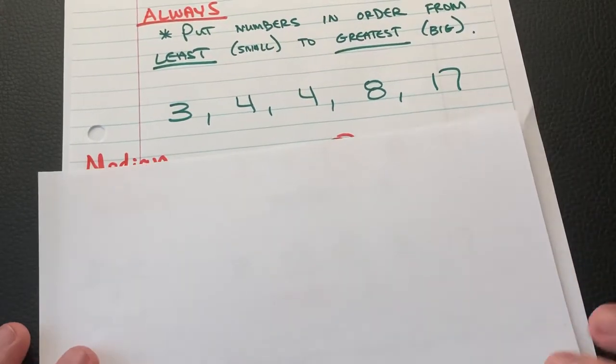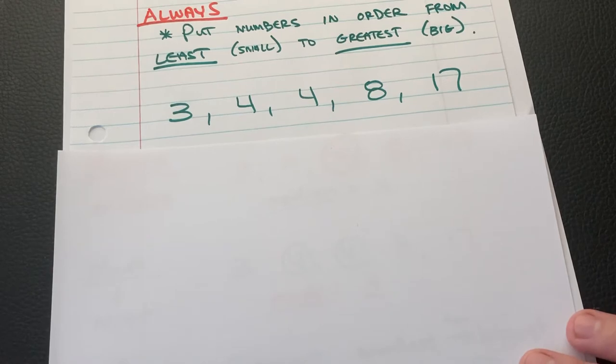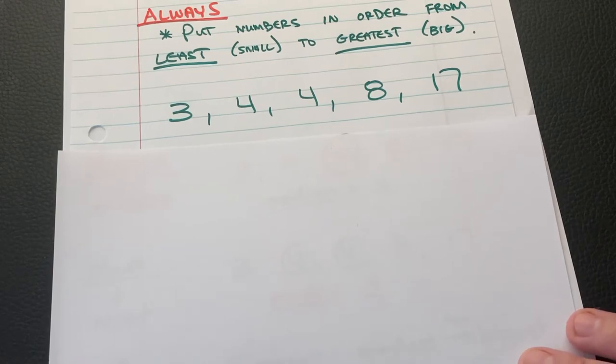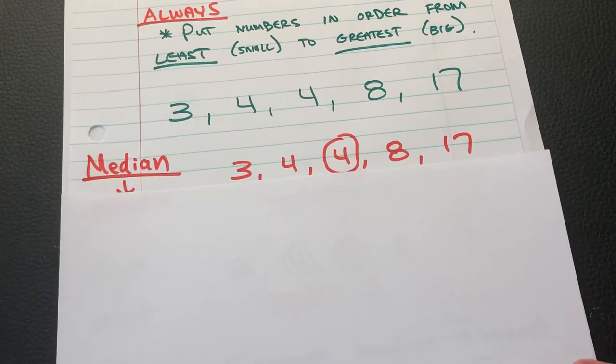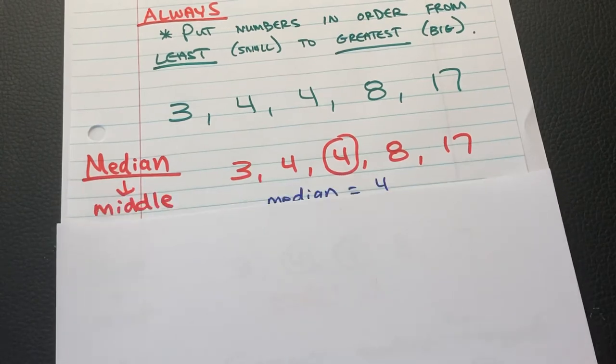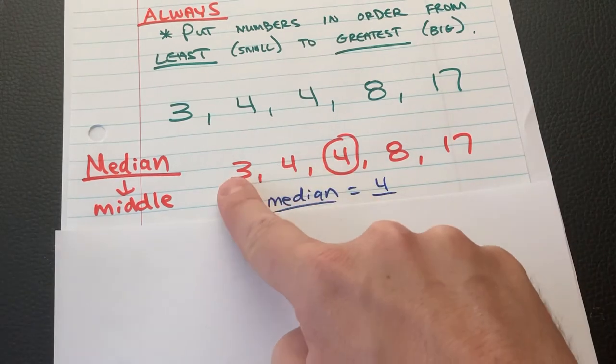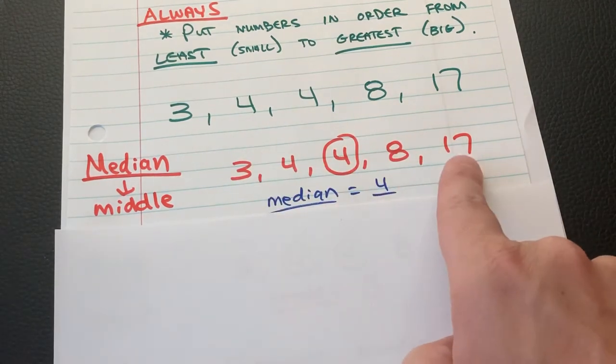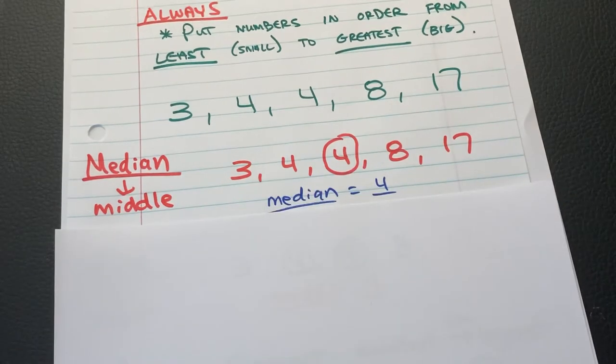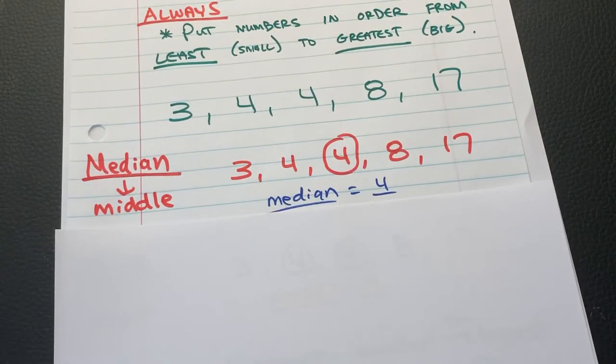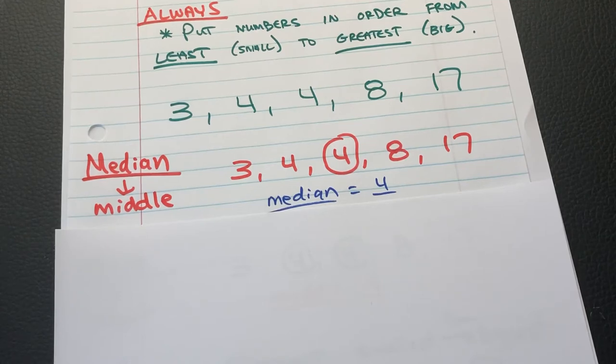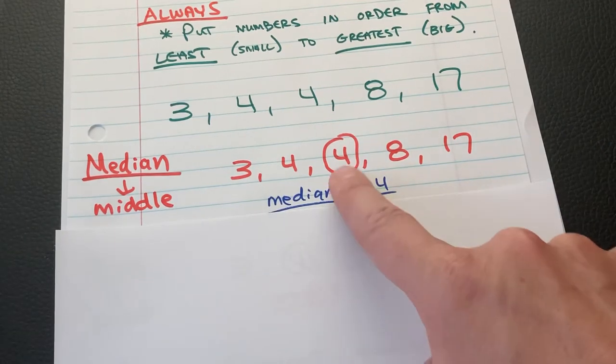Median is middle. It actually looks like the word middle. Which number is in the middle? The median would be 4. See how there's two numbers to the left, two numbers to the right. The 4 is in the middle. That's the median. That is super easy. This would be difficult if you did not put the numbers from least to greatest. That's why you need to put them from smallest to biggest always. Median is the number in the middle, which is number 4.